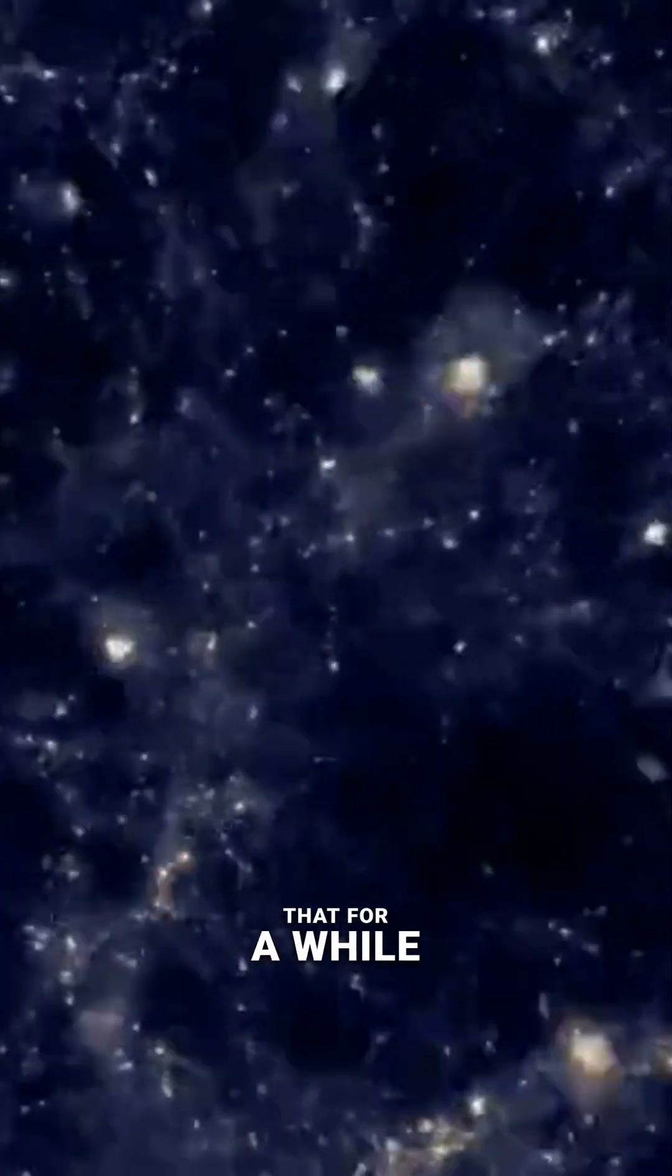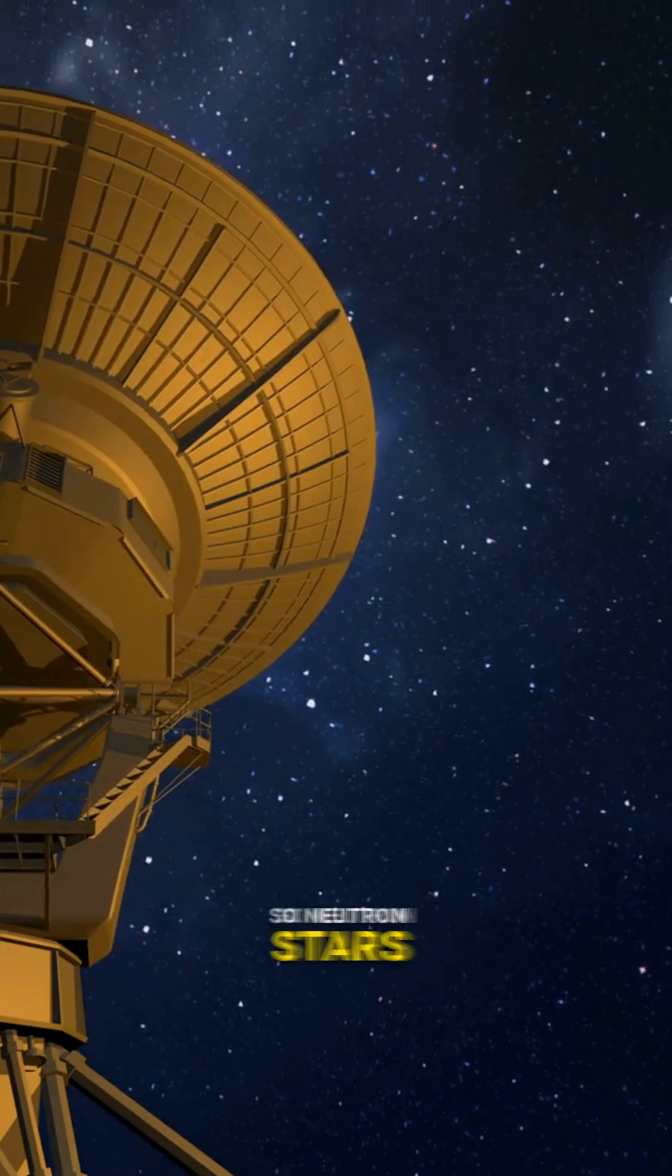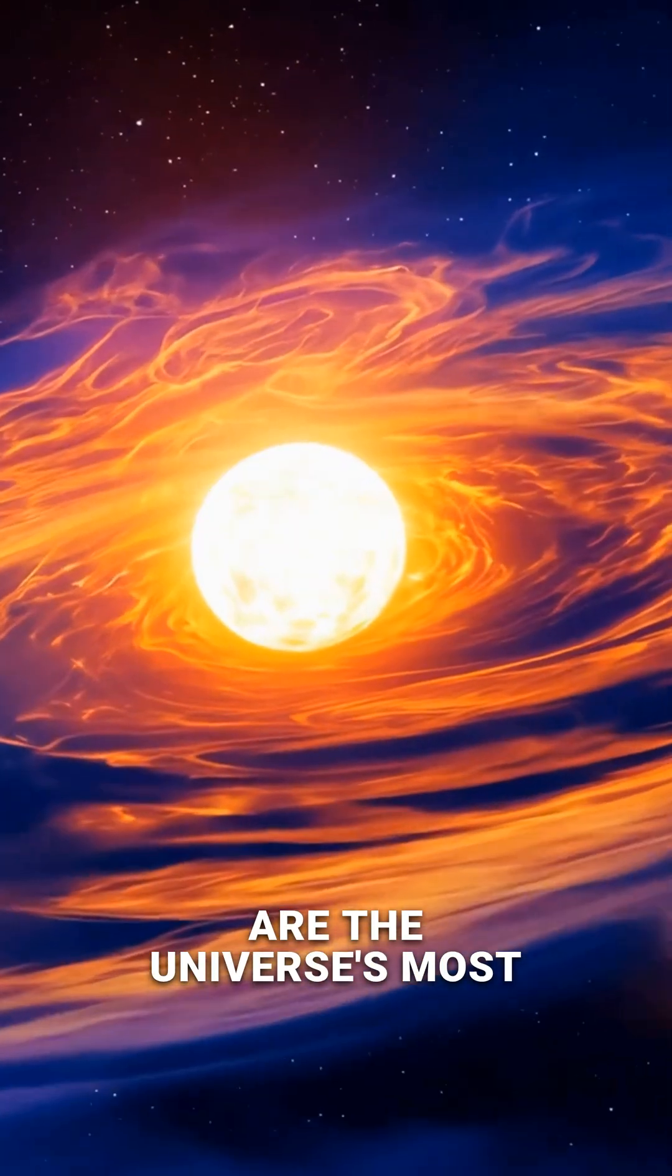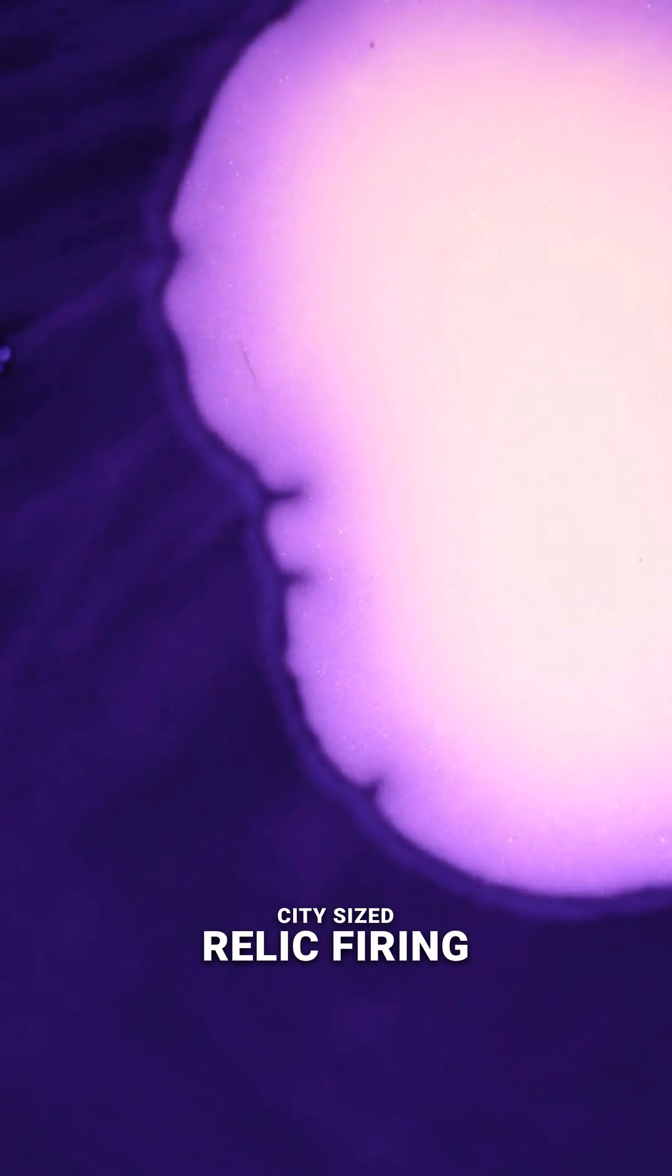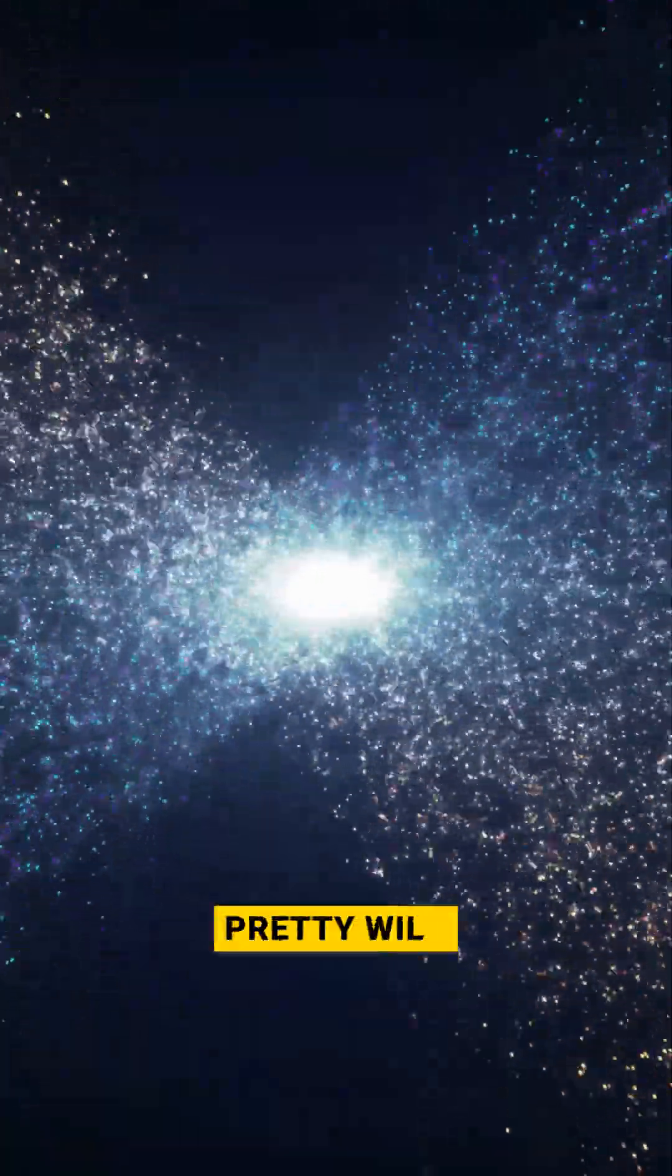They are so regular that for a while, scientists thought they might be signals from an alien civilization. So, neutron stars are the universe's most extreme examples of condensed matter. A spinning, super-dense, city-sized relic firing beams of radiation across the galaxy. Pretty wild, right?